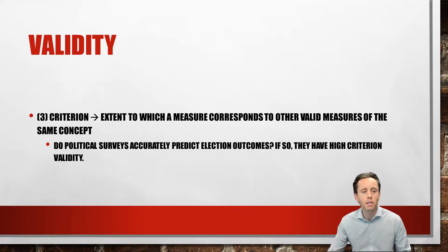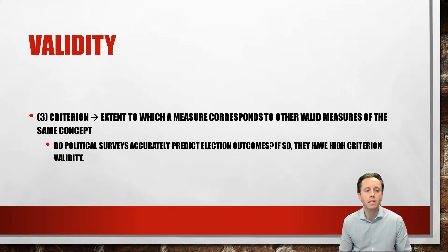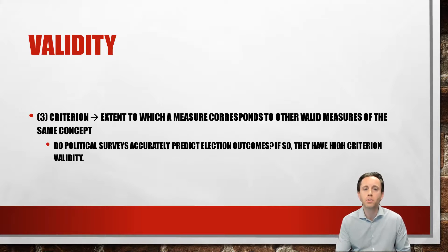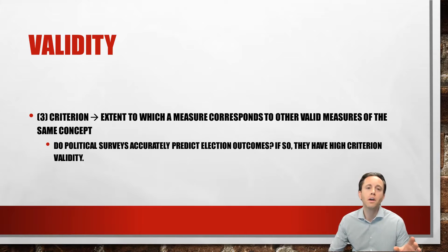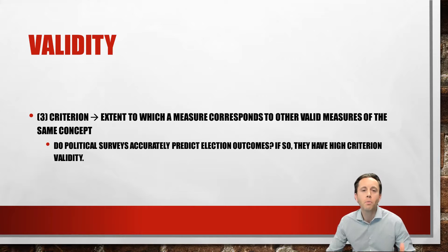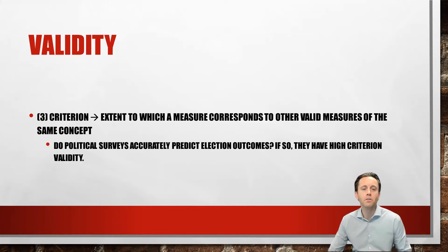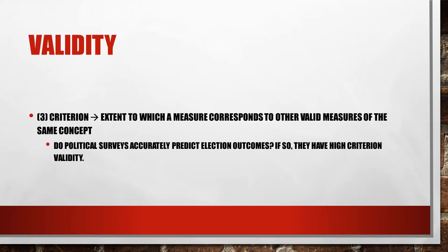The third kind of validity is criterion validity — that's the extent to which a measure corresponds to other valid measures of the same content. For instance, do political surveys accurately predict presidential outcomes? If that is the case, then those particular surveys would have high criterion validity. That's the difference between reliability and validity. I hope you've learned a little bit here today — please like and subscribe to my YouTube channel. Have a great day and take care.